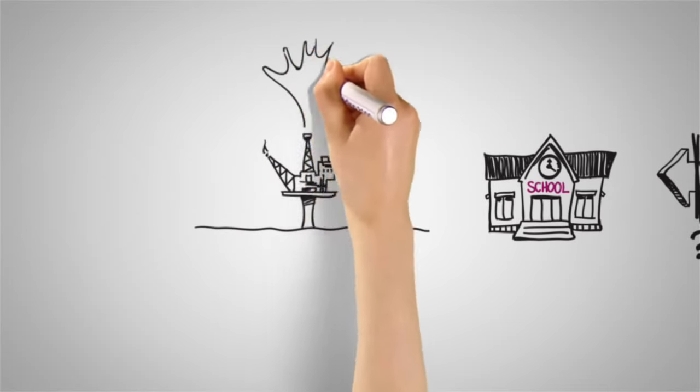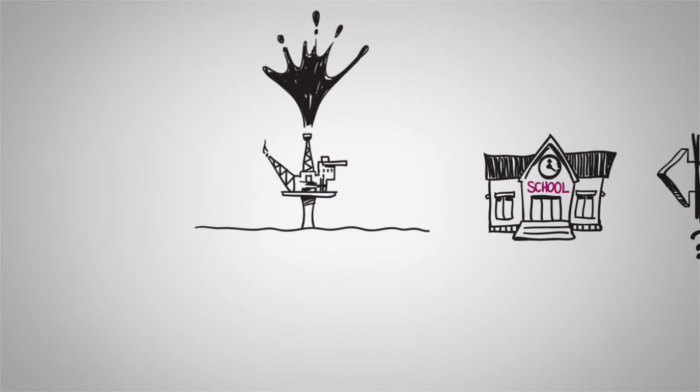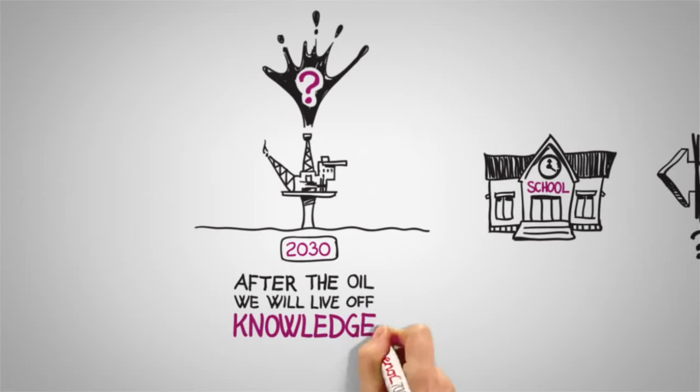Norway currently makes a good living from its oil. However, it could all be gone by as soon as 2030. People say that after the oil, we will live off knowledge.